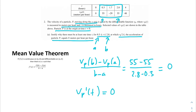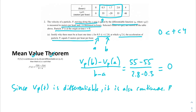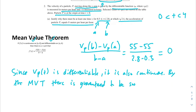Why are we able to use the Mean Value Theorem? Our problem says that this function is differentiable and is given from 0 to 4. Since it's differentiable, that also means it has to be continuous. Since V of P of T is differentiable, it is also continuous. By the Mean Value Theorem, there is guaranteed to be some T in (0.3, 2.8) for which V prime of P of T equals 0.